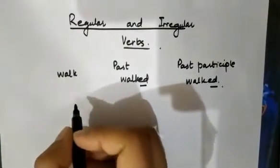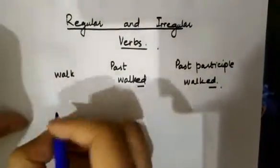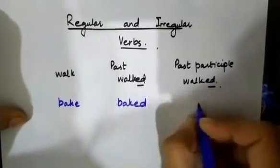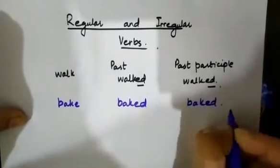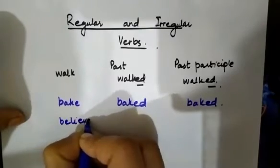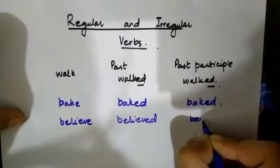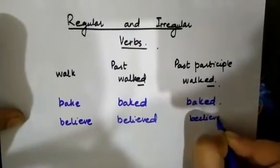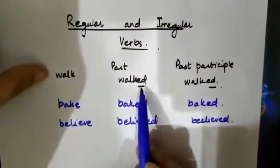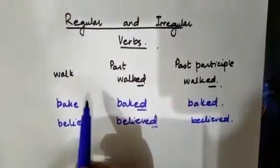Some more examples: walk walked walked, next bake baked, next believe believed and lived. You have noticed that these verbs in past form end with ed or d. These verbs are called the regular verbs.